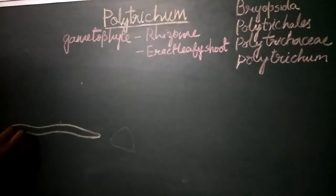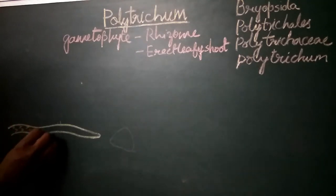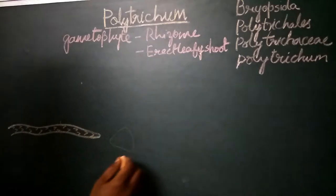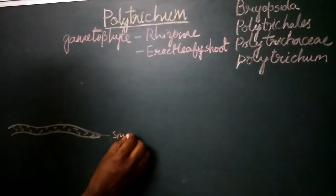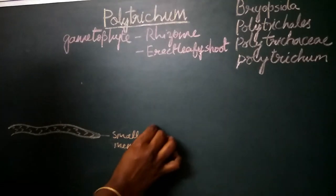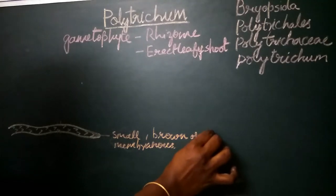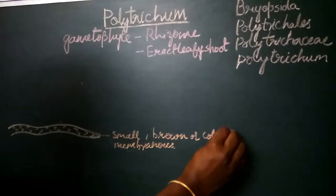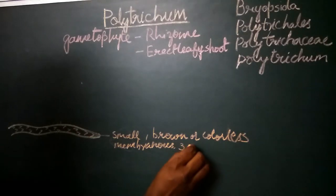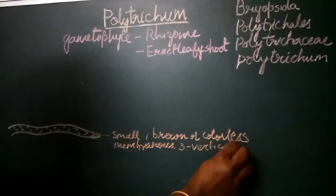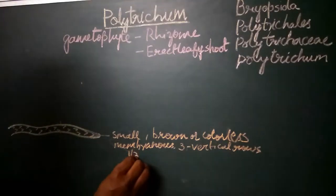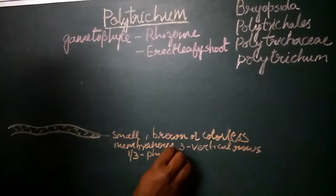The rhizome is covered by a large number of leaf-like structures which are called scale leaves. These scale leaves are small, membranous, brown or colourless, and are arranged in three vertical rows.